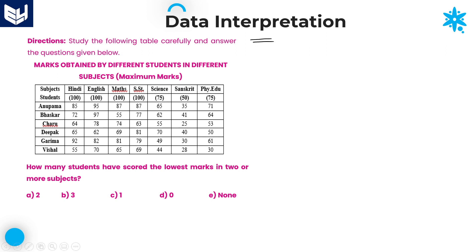See the first question — what is given? First of all, we need to see the information provided in the table. The information is: study the following table carefully and answer the given questions. The information is about marks obtained by different students in different subjects. Several subjects are there: Hindi, English, Math, Social Studies, Science, Sanskrit, and Physics.